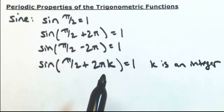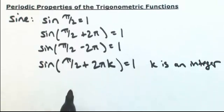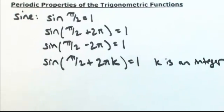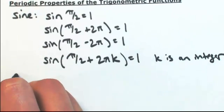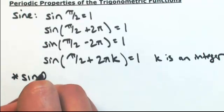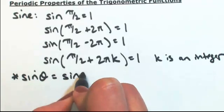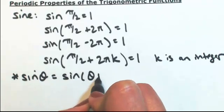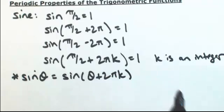So what this means is that if I add a multiple of 2 pi, we're always going to end up in the same spot, so the sine value will be the same. We can say in general that the sine of theta equals sine of theta plus 2 pi k.